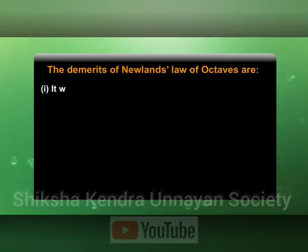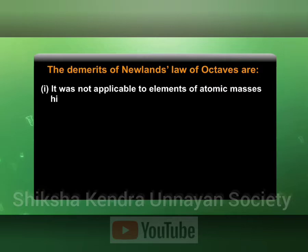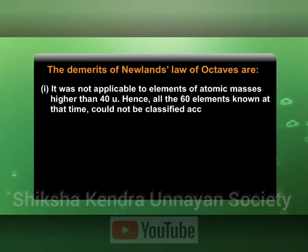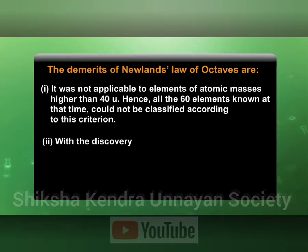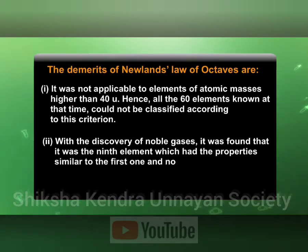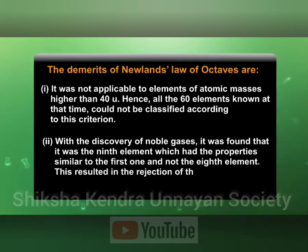The demerits of Newlands' Law of Octaves are: it was not applicable to elements of atomic number higher than 40, hence all the 60 elements known at that time could not be classified according to this criterion. With the discovery of noble gases, it was found that it was the ninth element which had properties similar to the first one, and not the eighth element. This resulted in rejection of the very idea of octaves.